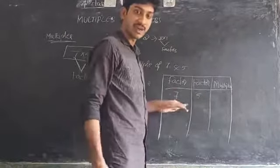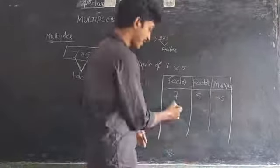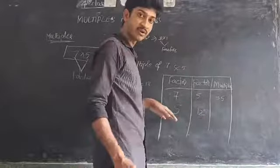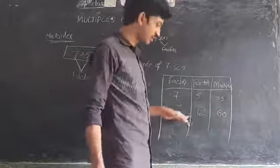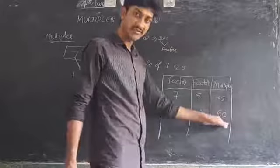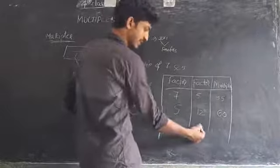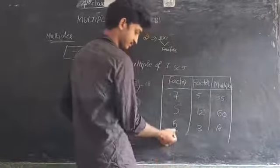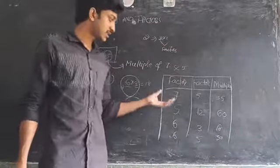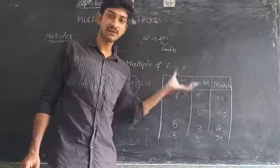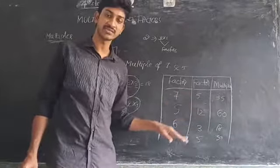Taking 5 and 12, the number formed by these two factors is 60, so 60 is a multiple of 5 and 12. Also, 6 and 3 give 18, and 6 and 5 give 30. The product of two numbers is called a multiple, and those two numbers are called the factors of that multiple.